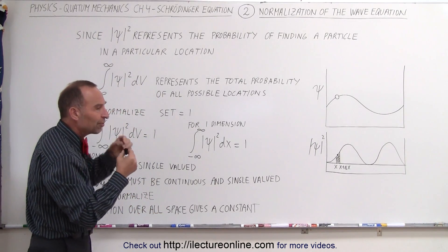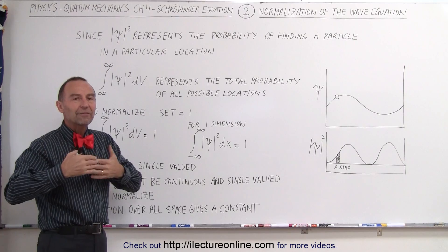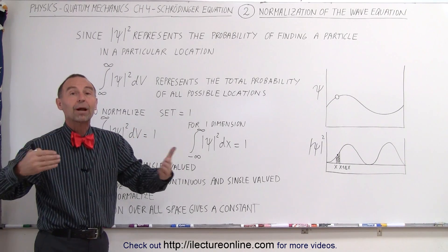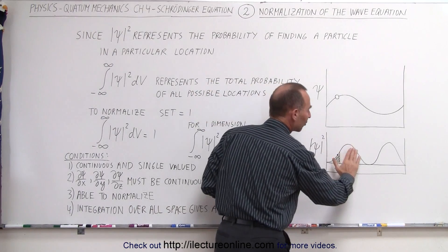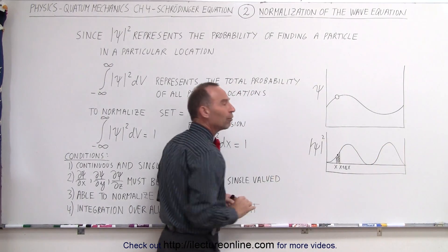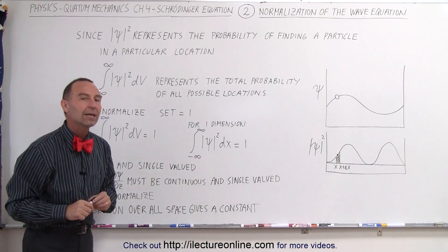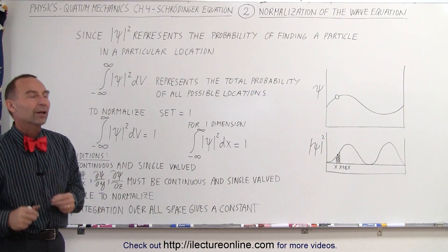Since it represents probability, you can never have greater than 100% probability of finding the particle, which means when we add up the probabilities of all the places where the particle can be, the total should never be greater than one.